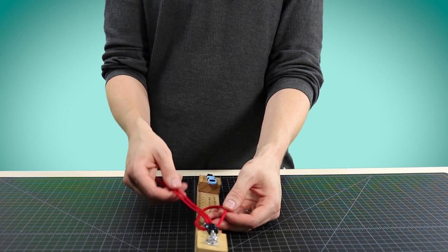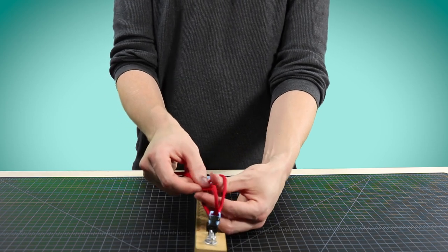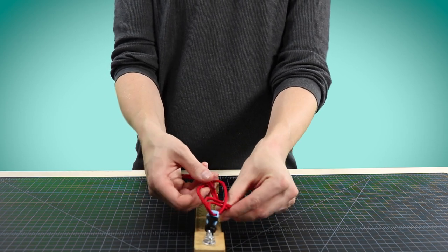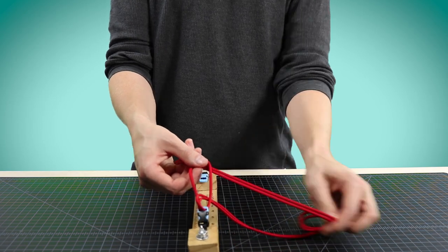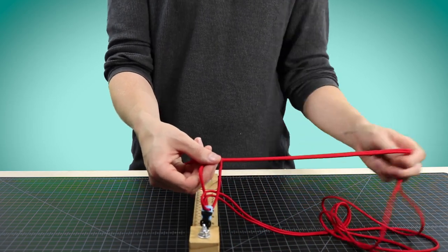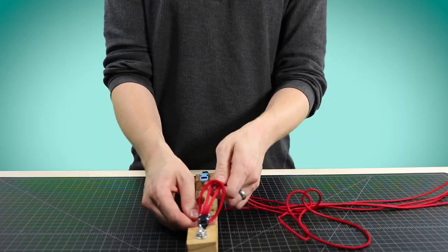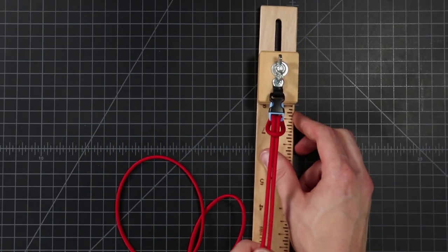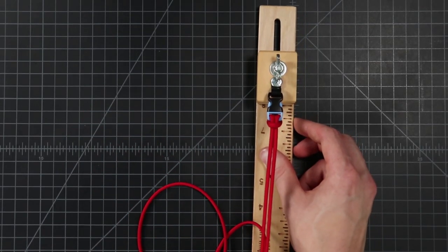Once you do that, take your ends and put them through that loop that you just put through the buckle. Pull all your slack through and cinch that down. That's called a cow's hitch or a lark's head.